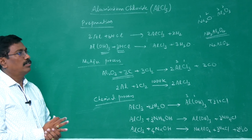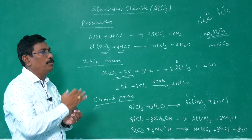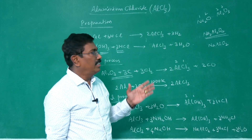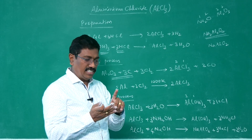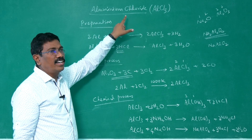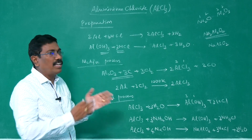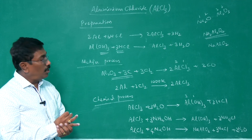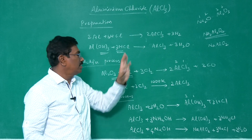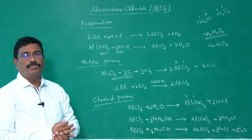Uses of aluminium chloride: whenever aluminium chloride is mentioned, you should immediately think of the Friedel-Crafts reaction. Anhydrous aluminium chloride, being a Lewis acid, is used as a catalyst in Friedel-Crafts alkylation and acylation reactions. It is also used in the manufacture of petrol by cracking mineral oils, again as a catalyst. Additionally, it is used as a catalyst in the manufacture of dyes, drugs, perfumes, etc., because of the electron-deficient nature of the molecule.